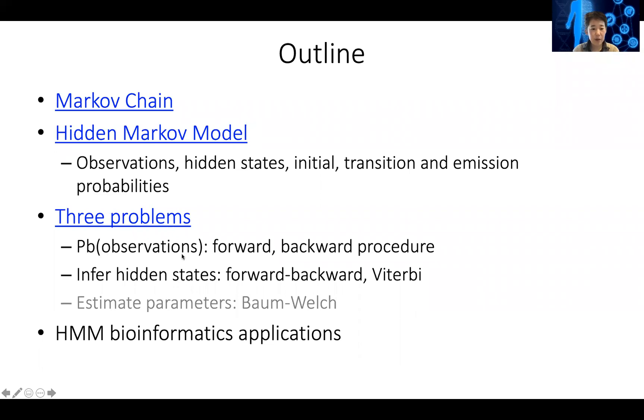The first hidden Markov model problem is to calculate the probability of a particular string of observations, knowing the parameters of the hidden Markov model. We discussed two procedures, forward and backward procedure, and they should give you identical results.